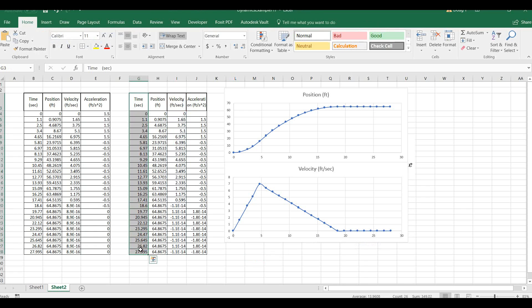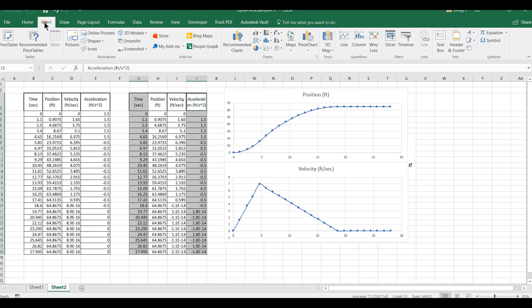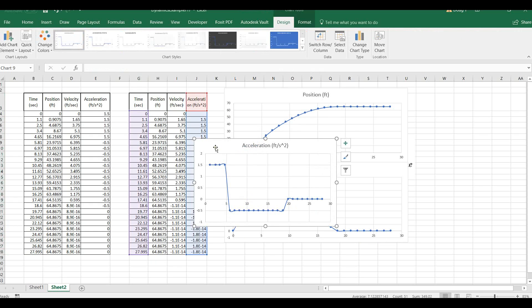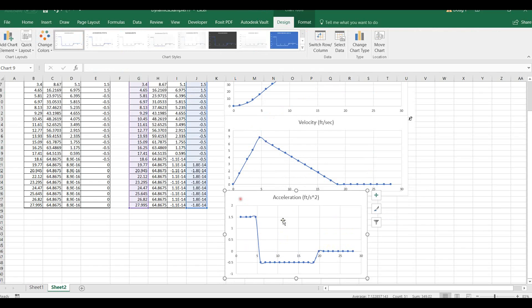The last graph, highlight time. Hold down my control key and highlight acceleration. If you increase some of these, 1 times 10 to the negative 14th, that's zero. You can ignore Excel's little rounding issues there. Here's my third graph is acceleration.